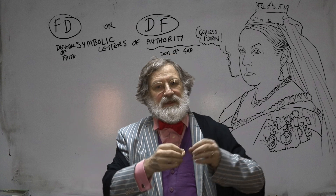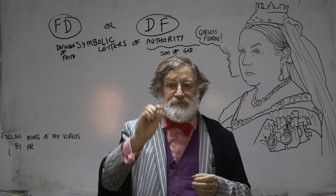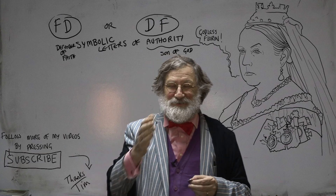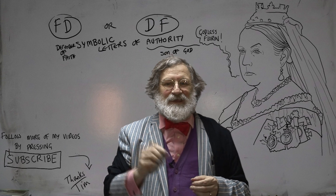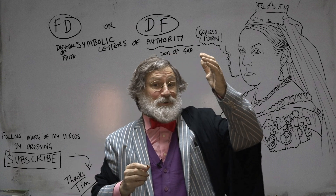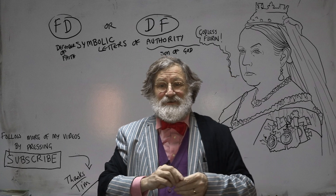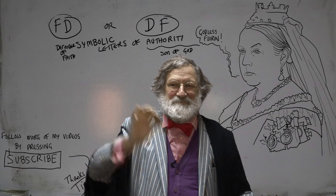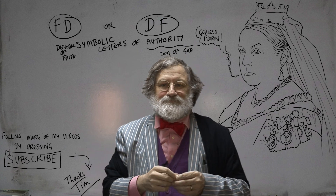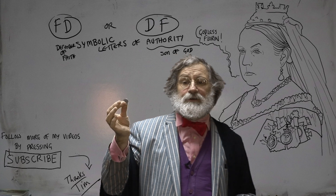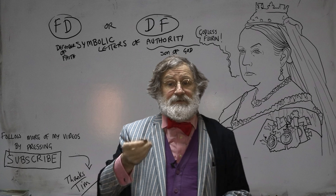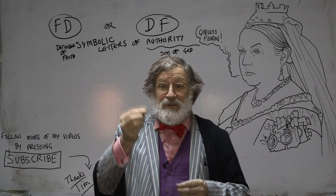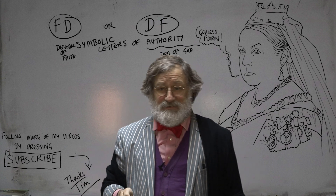Now let's link all those things together. FD — Defender of the Faith. FD — Son of God, or DF — Son of God. And the titles given to Augustus, to Jesus, and to our own monarch. We've got a little bit of history in our pocket — a little bit of history and a little bit of religion. All these things come down to the money that we are using on an everyday basis.